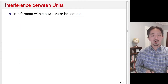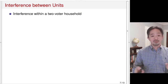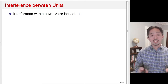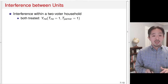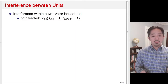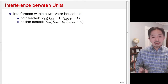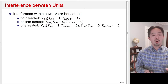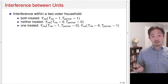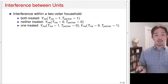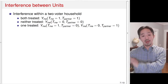Now let's think about this a little bit more. Consider interference within a two-voter household. Suppose interference only happens within the household and there are only two voters. It's possible that both me and my partner could be treated, neither might be treated, I'm the only one who is treated, or my partner is the only one who is treated. So in total there are four possible potential outcomes for me, depending on whether I'm treated and also whether my partner is treated.